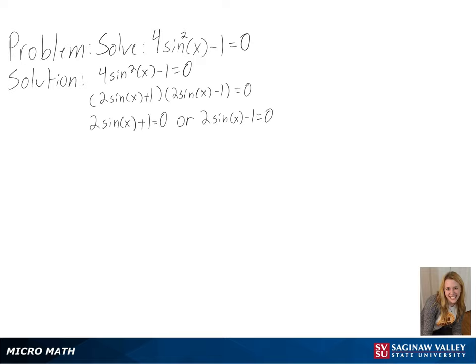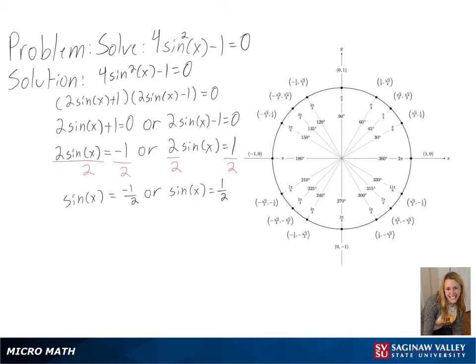So we are left with 2 sine x equals negative 1, or 2 sine x equals 1. After simplifying, we can look at a unit circle to see where we do get these values.